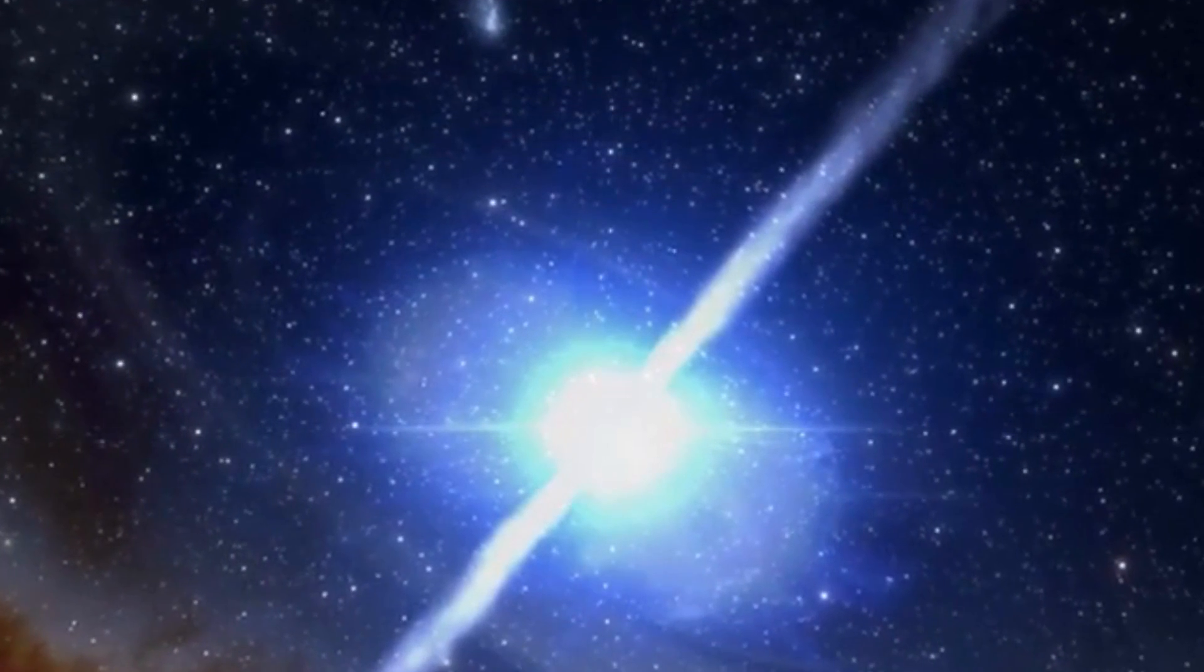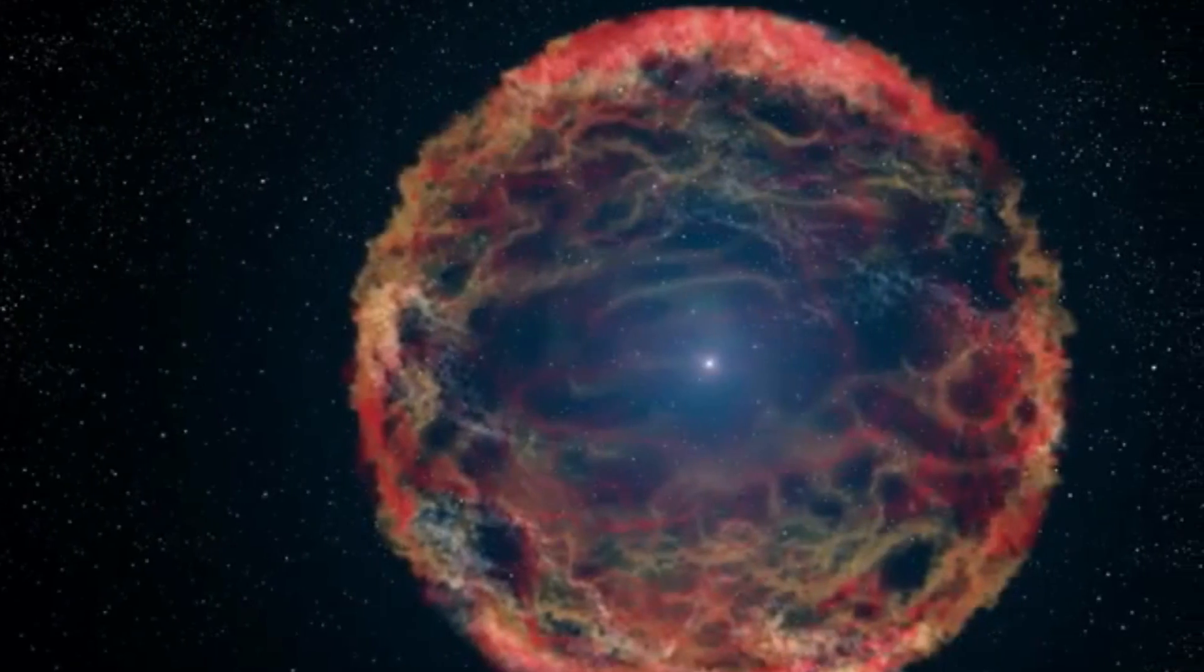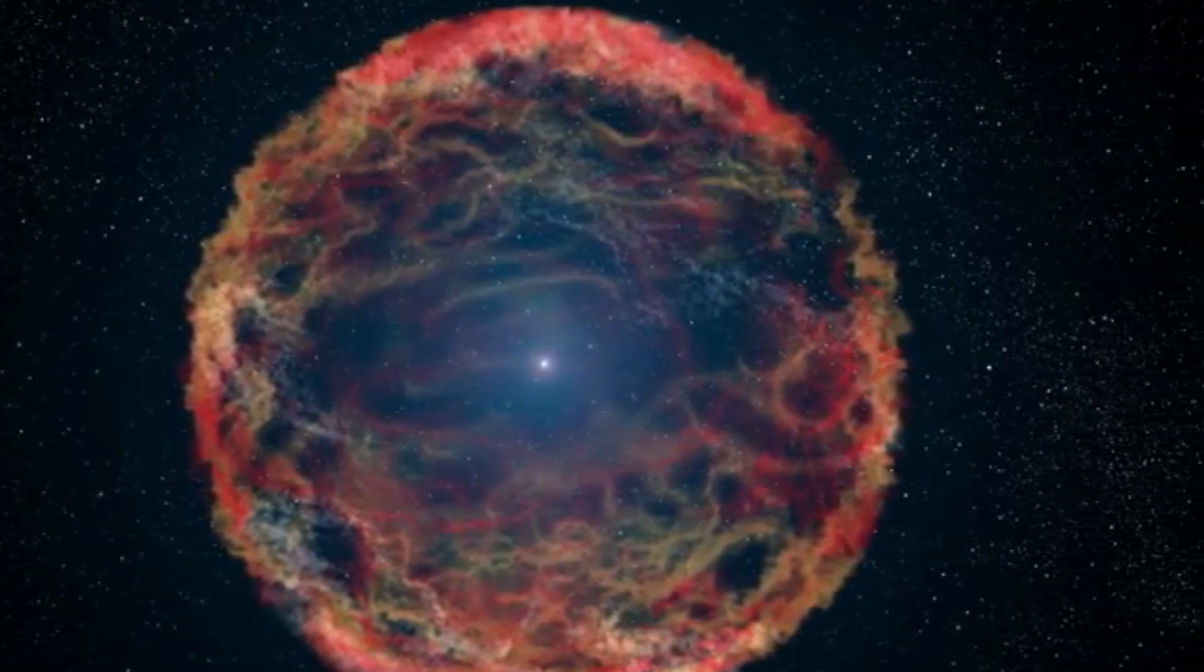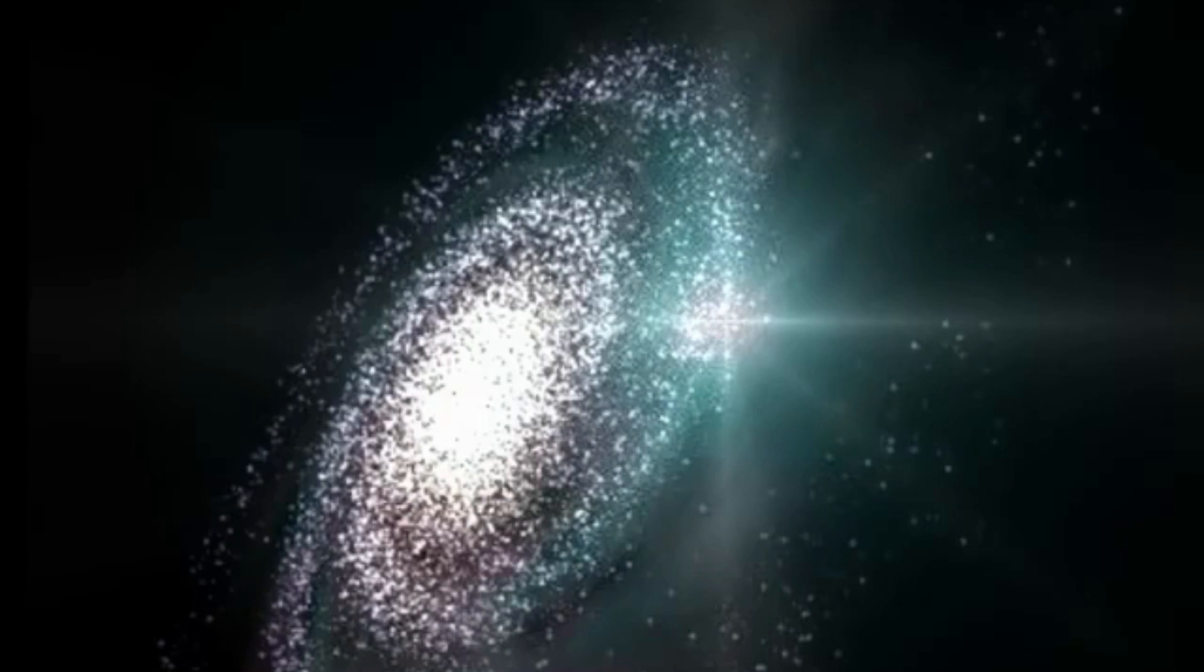3. Neutron stars are incredibly dense objects that form after a massive star goes supernova. They are about 1.5 times the mass of the Sun, but are only around 20 kilometers, 12 miles in diameter.